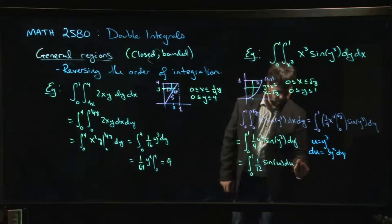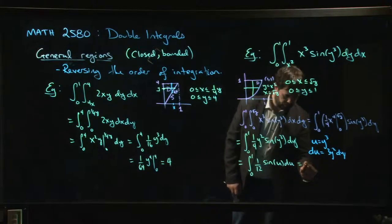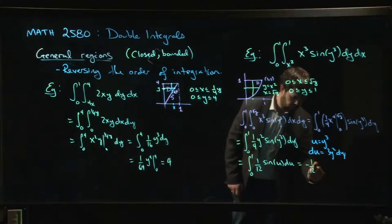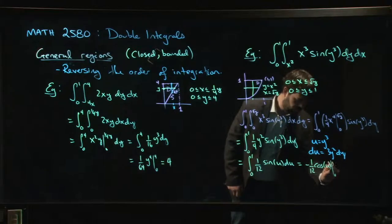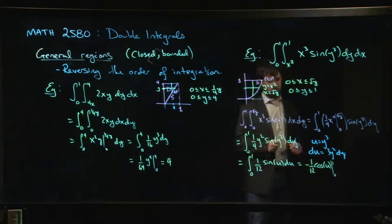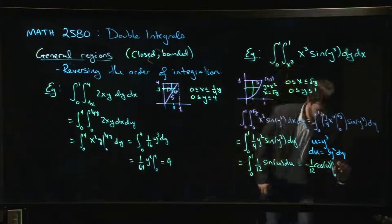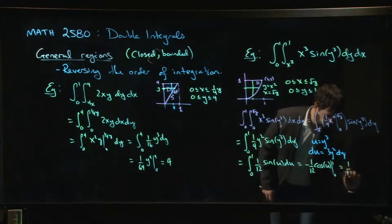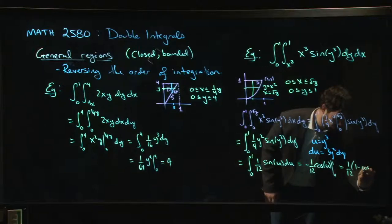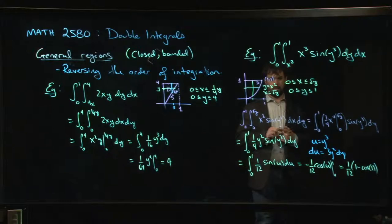All right, so we get minus 1 over 12 cos u from 0 to 1. Okay, so this is going to be, once you work it out, 1 over 12 times 1 minus cos of 1. Okay, and then you're done.